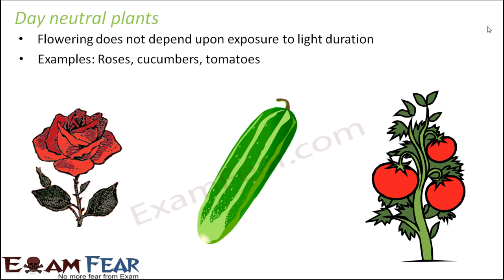Plants like day neutral plants, which are not dependent on light duration, will flower regardless of whether it is summer, spring, or autumn — they flower once they reach a certain stage or age and will start flowering on their own. So this is the concept of photoperiodism, and here we see that light plays a very crucial role in the flowering of plants.